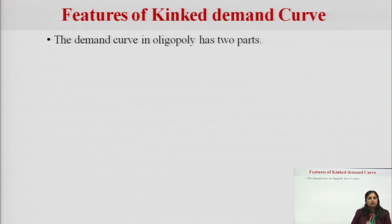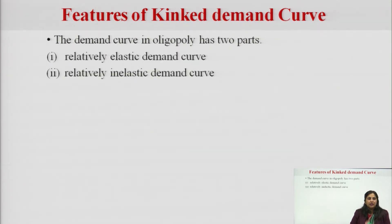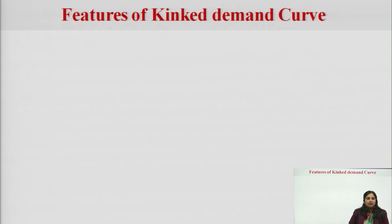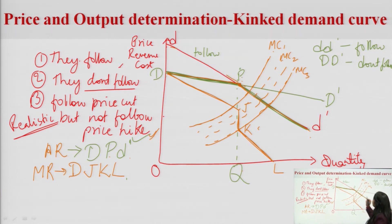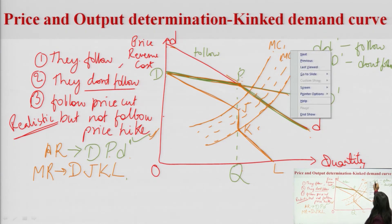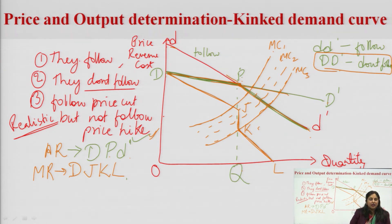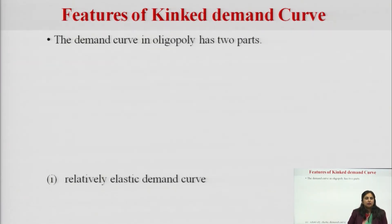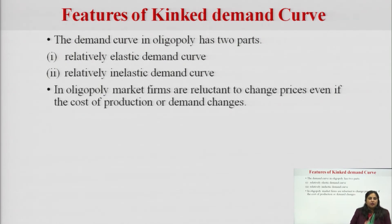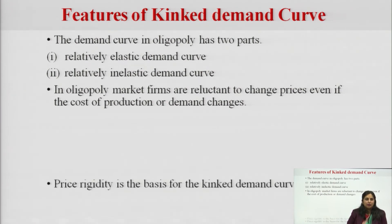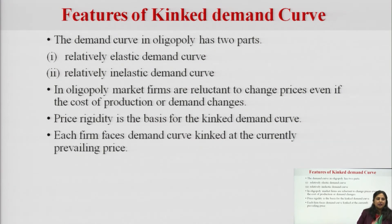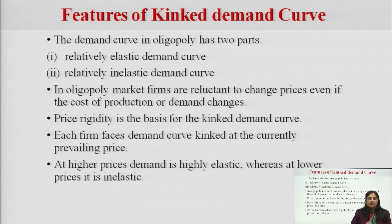So what we have come to know is that the demand curve is made up of two parts: a relatively elastic demand curve and a relatively inelastic demand curve. The D-D dash (rivals following) is less elastic, and the capital D-D dash (rivals not following) is more elastic — because when rivals do not follow, there is more change in demand, making the demand curve more elastic. In oligopoly, sellers do not change prices frequently; rather they want to stick to a price. Price rigidity is the basis of the kinked demand curve. At higher prices demand is highly elastic, while at lower prices demand is inelastic.